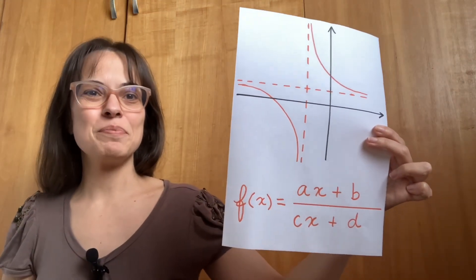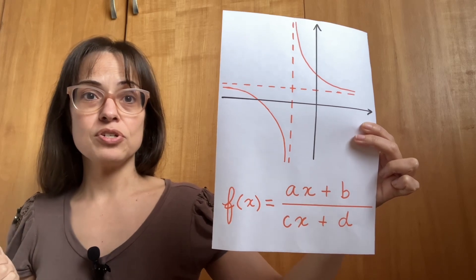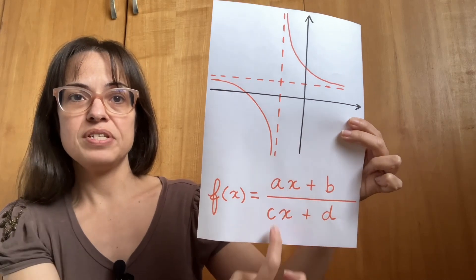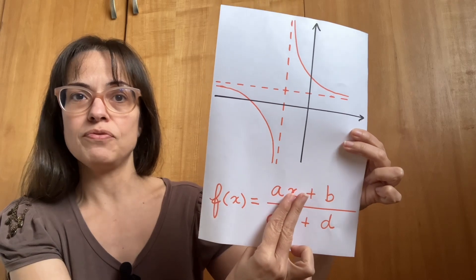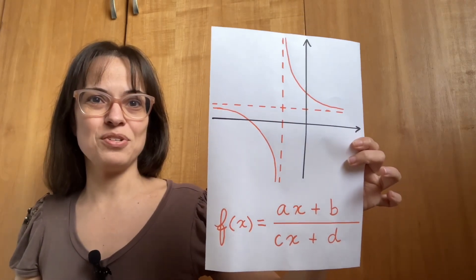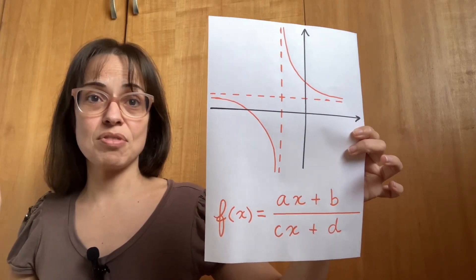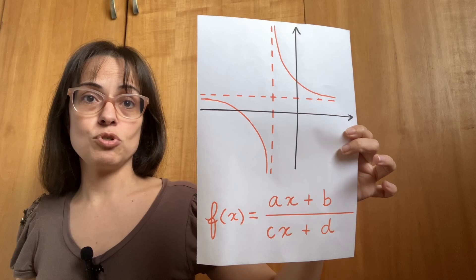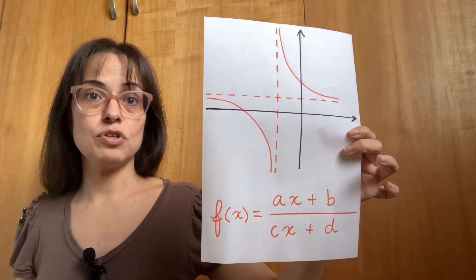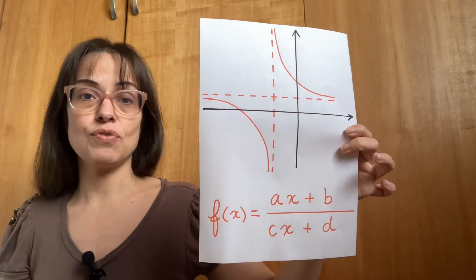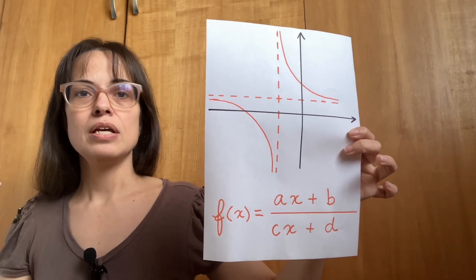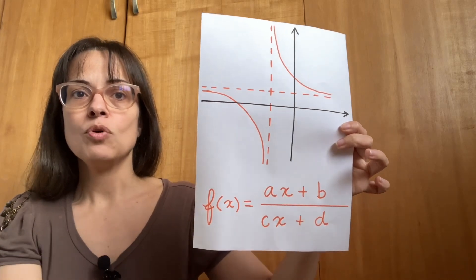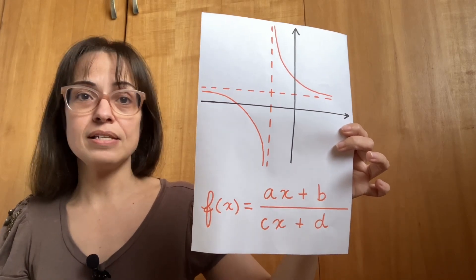Let's apply these concepts to our rational function. For the y-intercept, it's f(0): a·0 is 0, c·0 is also 0, so we're left with b/d. For the vertical asymptote, it happens at a value outside the domain — the domain problem here is division by zero. So the vertical asymptote is at the value of x that makes the denominator zero: that is, x = −d/c.